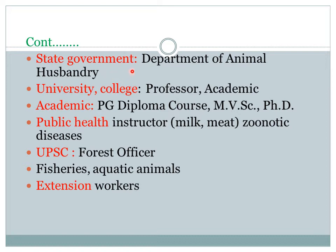In every state there is a Department of Animal Management, so it employs a large number of veterinarians every few years. Veterinarians are also required in universities — agriculture universities or veterinary universities — and in veterinary colleges, where you can be appointed as a professor and in related jobs. There you have to perform mostly academic, research, and extension duties.